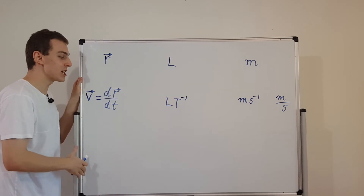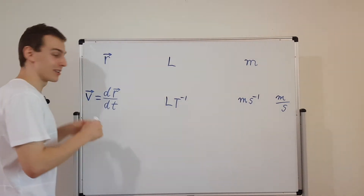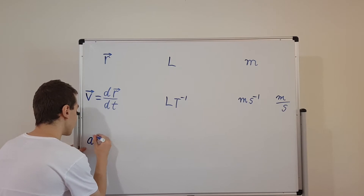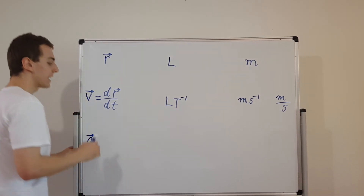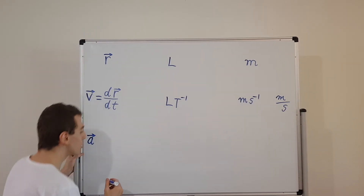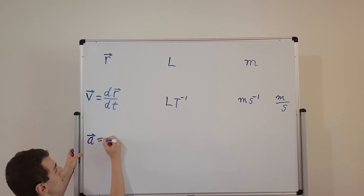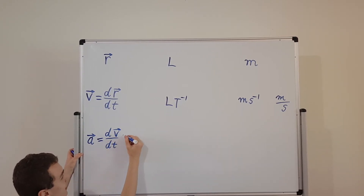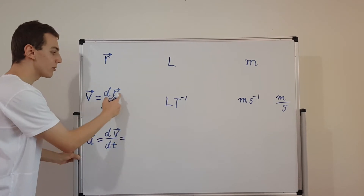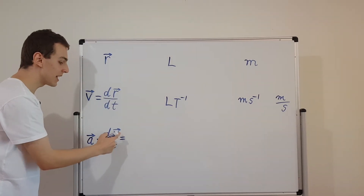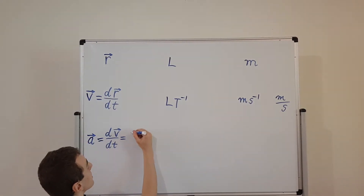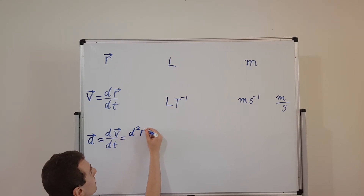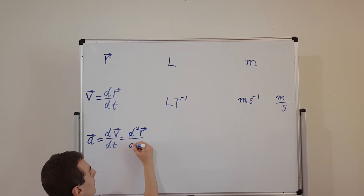Now let's do this differentiation again to get acceleration. We're going to take a to be acceleration — the vector a is acceleration, and acceleration is the time derivative of velocity. So we have dv/dt, the time derivative of velocity. And what is this actually equal to? Because velocity is the time derivative of position, we can substitute that in, and that gives us the second time derivative of the position vector. So this is the notation for the second time derivative.